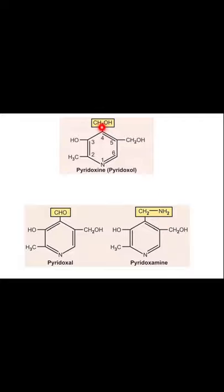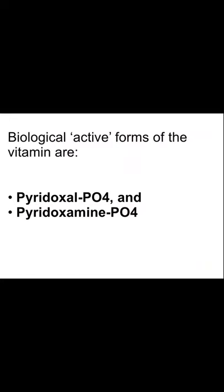Because of these functional groups, they have these names: pyridoxin (alcohol), pyridoxal (aldehyde), and pyridoxamine (amine). The biologically active form of this vitamin is pyridoxal phosphate, also known as PLP, and pyridoxamine phosphate.